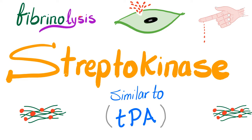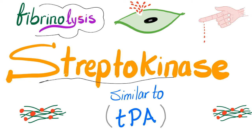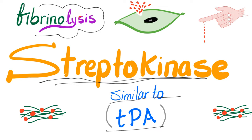Another day, another hematology video from Medicosis Perfectionalis. In my series about bleeding and coagulation disorders, we have been talking about fibrinolysis for several videos. In the previous video, I told you the clinical uses of TPA. Today, let's talk about fibrinolytic or thrombolytic therapy with streptokinase. It's actually not so great — it's allergic, has increased risk of bleeding, and causes transient hypotension.